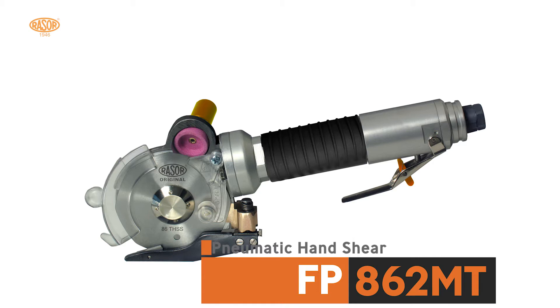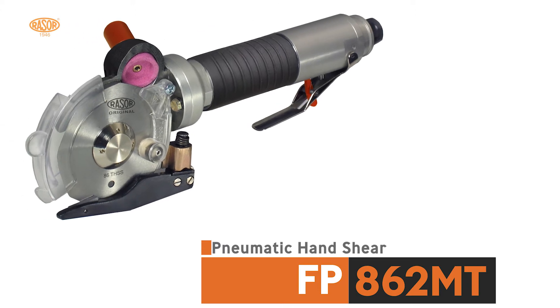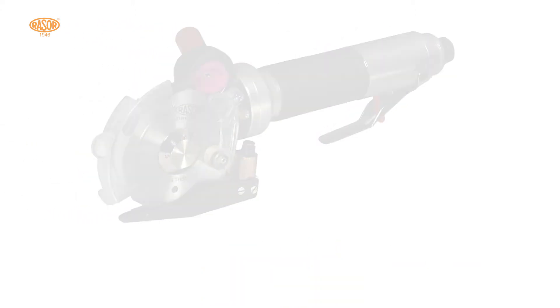The new FP862MT cuts easily glass fiber, carbon fiber, and kevlar up to a cutting thickness of 25 millimeters.